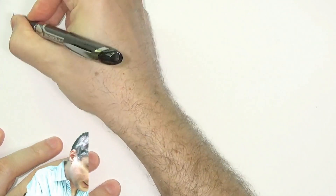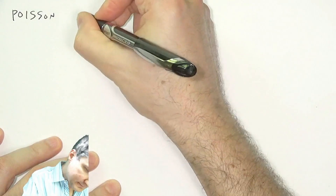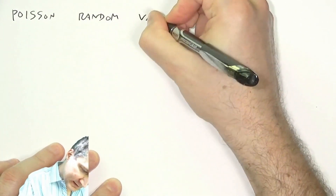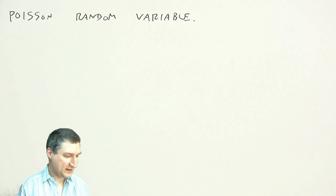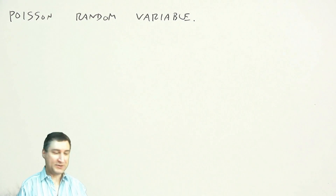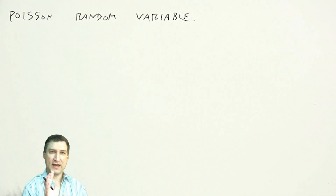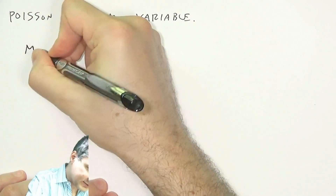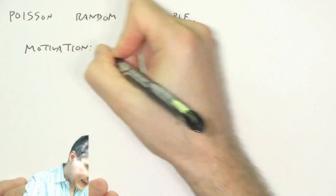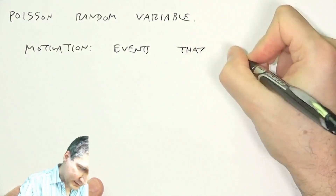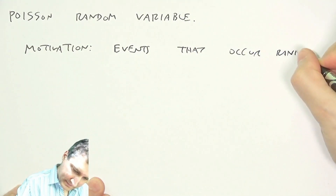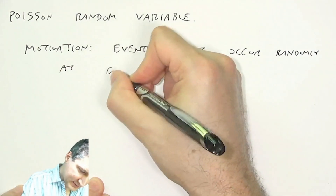Just a little mini lecture on a special random variable called the Poisson discrete random variable. Poisson is French for fish, and the guy who discovered it was named Poisson. This is very important in situations where you've got events that are occurring along a timeline — events that occur randomly at continuous times.